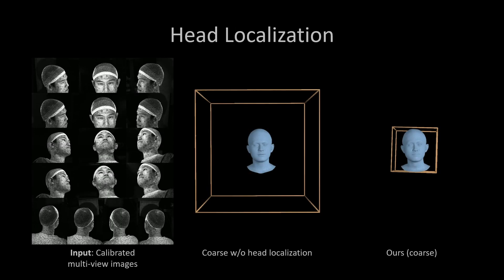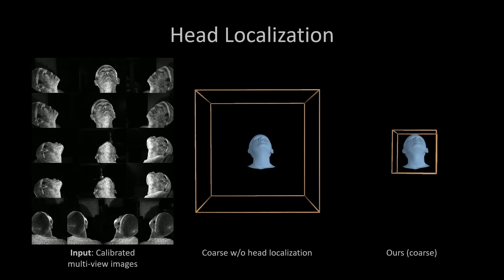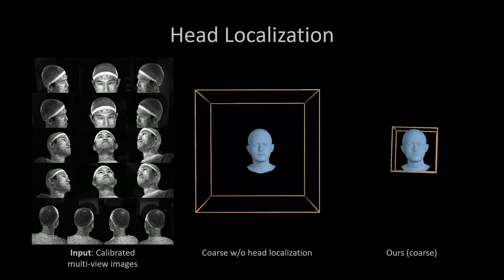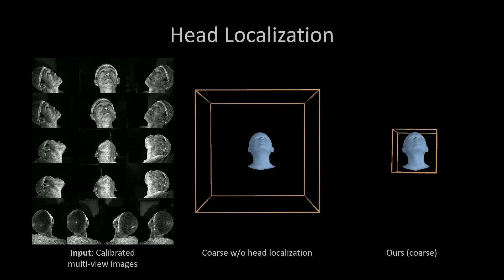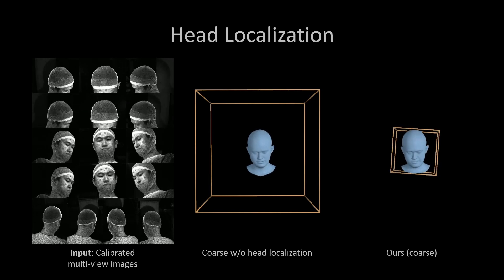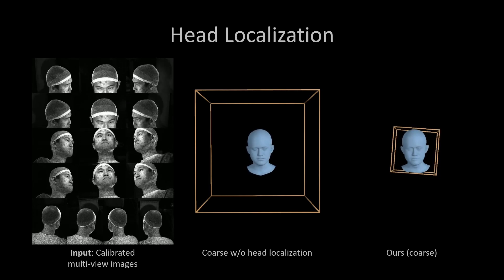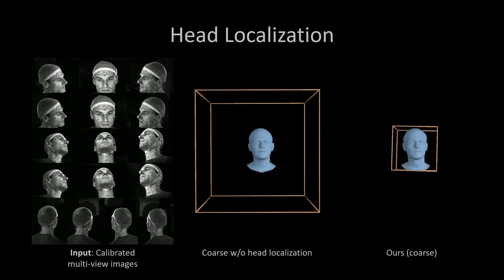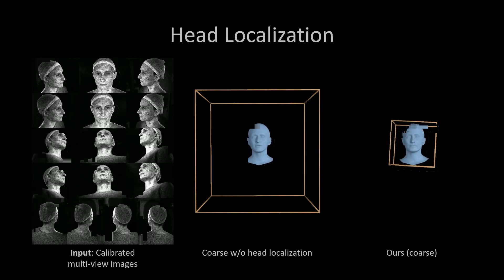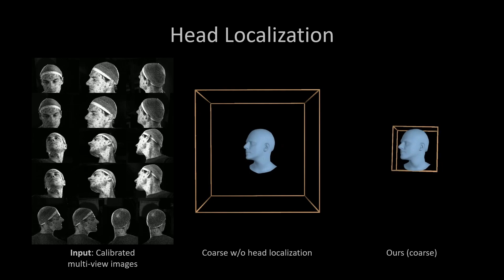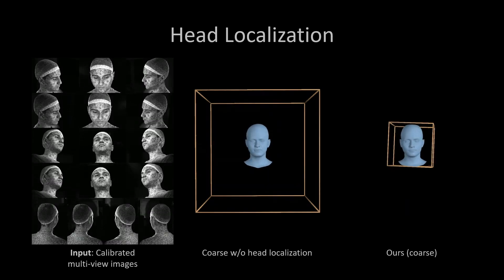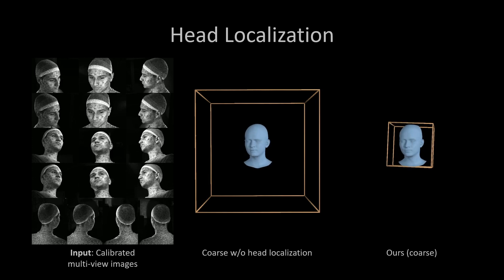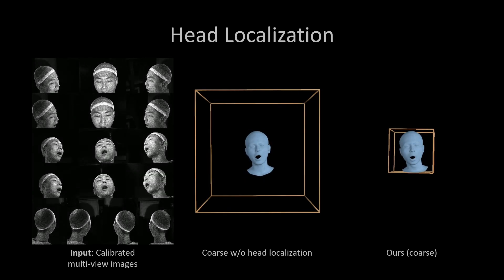Here we demonstrate the impact of the head localization. The left shows the predictions of the model without head localization, along with the initial capture volume depicted as a cube. The right shows the predicted heads and the localized feature volume. This demonstrates that the spatial transformer module reliably localizes the head and that inferring heads from the localized volume improves the prediction quality.